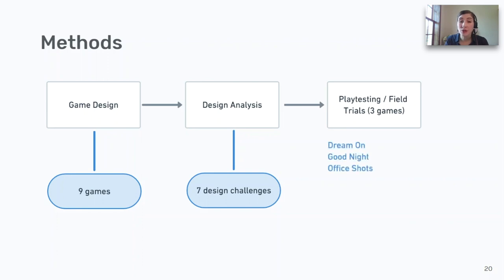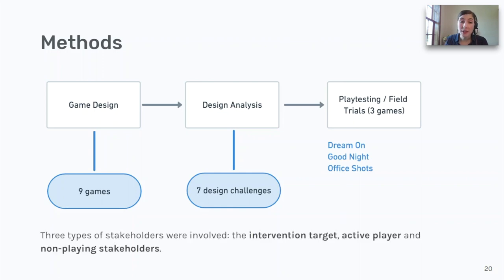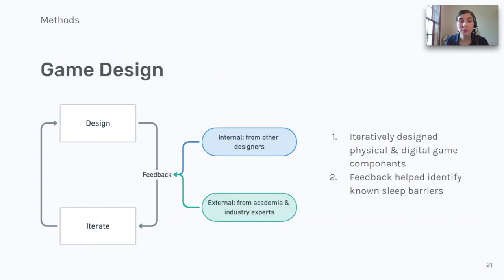The selected games are Dream On, Good Night, and Office Shots. Stakeholder types included intervention target, or person with sleep barrier; active players, or people playing the game; and non-playing stakeholders, or non-playing individuals affected by the target's behavior. Nine game design teams created sleepy game prototypes, many of which were comprised of both physical and digital components. In consultation with sleep experts from an industry partner, each team selected a user group that had known barriers to healthy sleep.